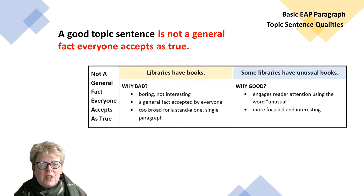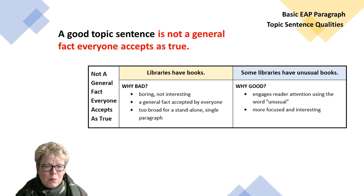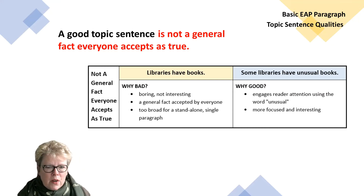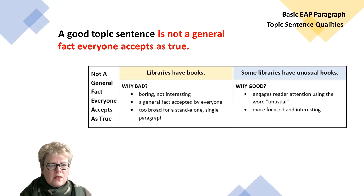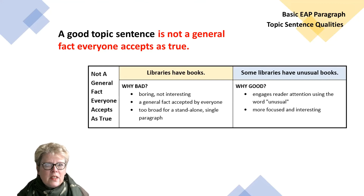A good topic sentence is not a fact accepted as true by everyone. 'Libraries have books' — that's an accepted fact. 'Airplanes are the fastest mode of travel' — accepted fact. 'The sun comes up every day' — accepted fact. These are big things we take for granted. Why is that bad? Because it's boring and not interesting — everybody already knows about it, and it's too broad for a stand-alone single paragraph. Now, 'Some libraries have unusual books' is much better. It's more focused and interesting, engages the reader's attention using the word 'unusual,' and is specific.